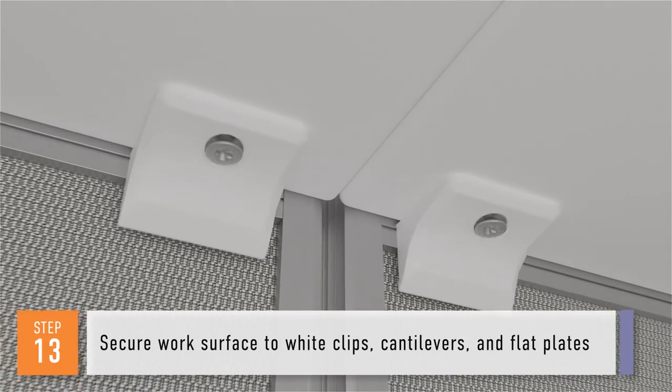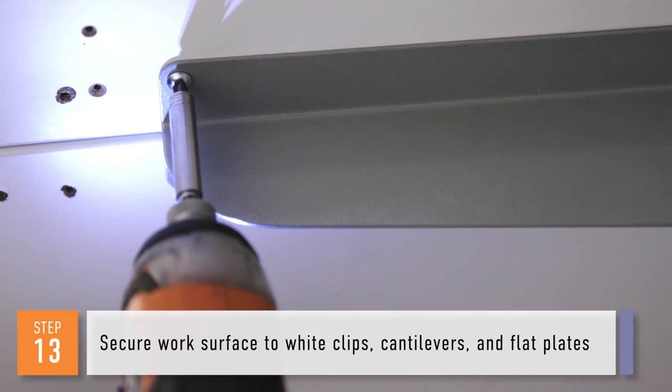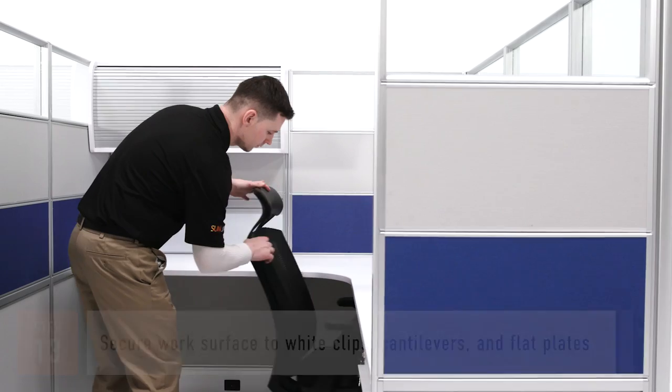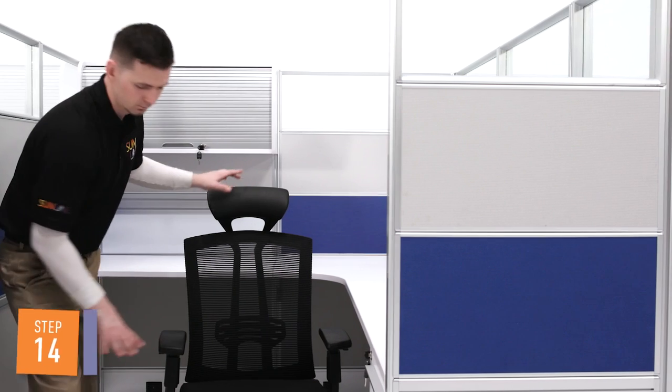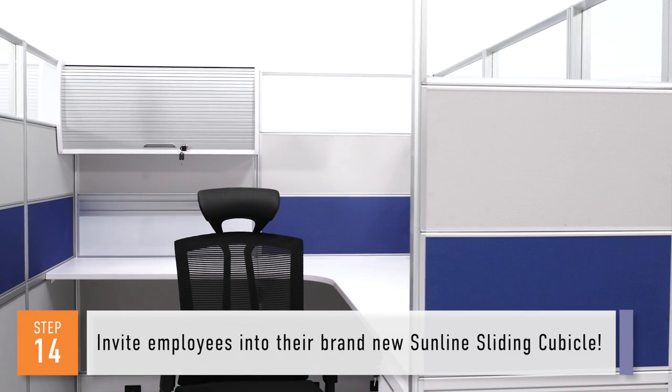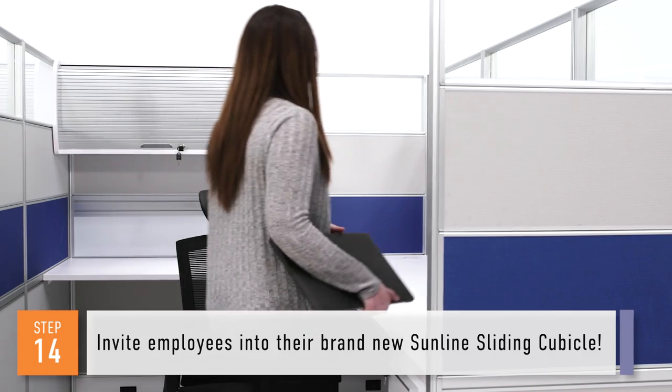Step thirteen. From below the surface, screw up into all white clips and cantilevers and secure flat plates where necessary. Lastly, now that you've assembled the full station, invite employees to sit down and enjoy their brand new Sunline sliding cubicle.